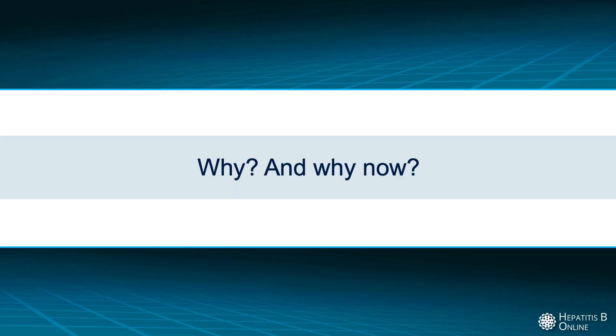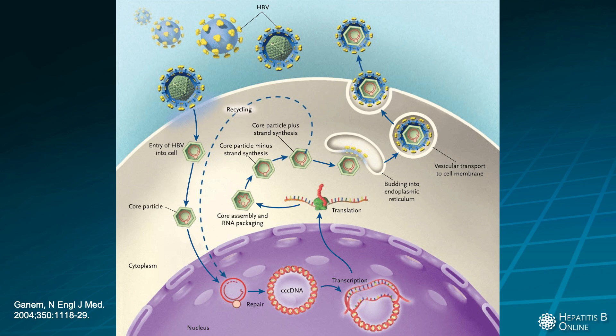At the heart of this matter is the persistent nature of hepatitis B infection. In this depiction of the viral life cycle, you can see that the virus, upon entering the liver cell and eventually the nucleus, integrates itself into the host genome. In doing so, the virus establishes itself through covalently closed circular DNA as a template for viral expression. In other words, an individual who has been exposed to the virus remains at risk, even after resolution of acute infection, of having recurrent expression of the virus with the loss of immune control.